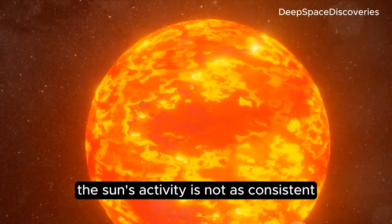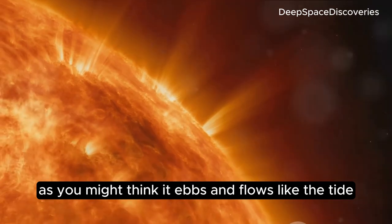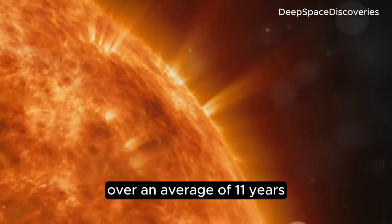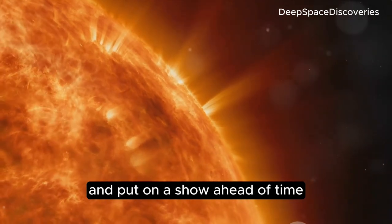You see, the Sun's activity is not as consistent as you might think. It ebbs and flows like the tide, over an average of 11 years. But Cycle 25 has decided to defy the norm and put on a show ahead of time.